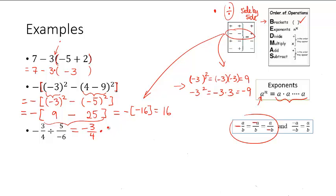So we've got negative 3 quarters divided by 5 over negative 6, which is the same as multiplied by negative 6 over 5. Two negatives make a positive. And we can multiply our fractions by multiplying the tops and the bottoms together. Or you can simplify before you multiply. So here 6 and 4 can be divided by 2 to give us 3 over 2. So that gives us 9 over 10, 9 tenths.